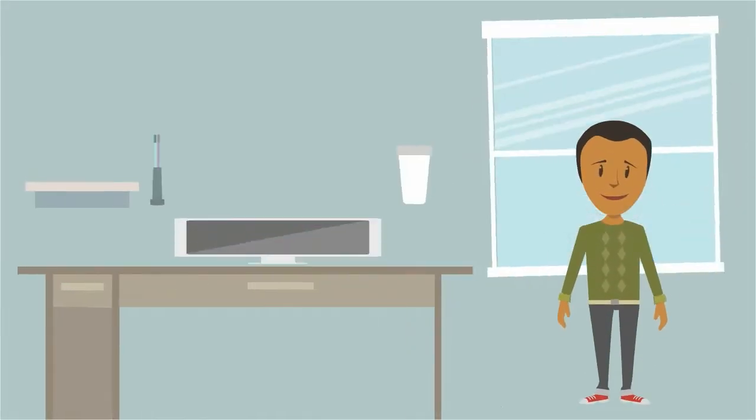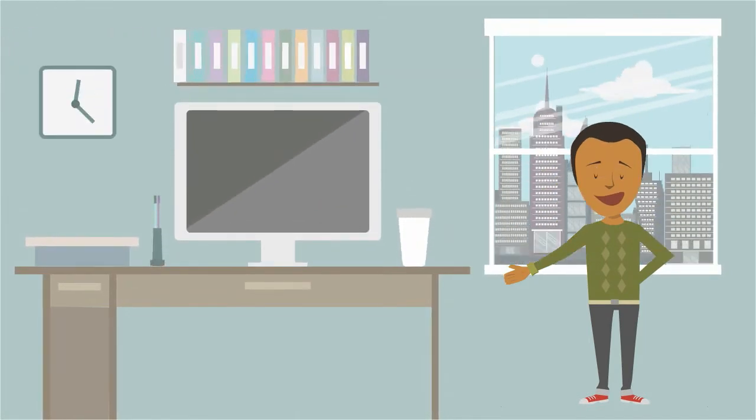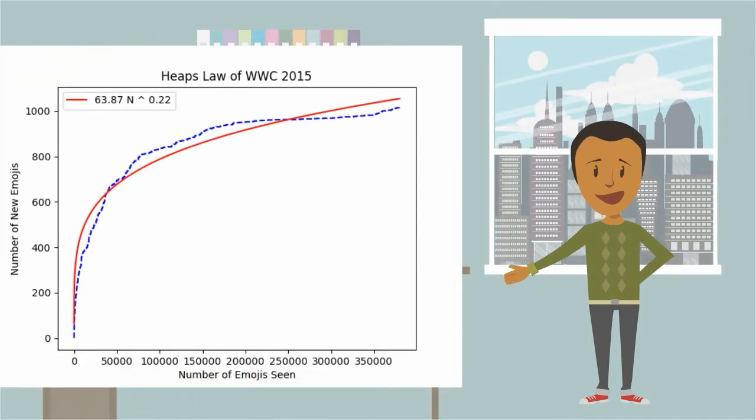Since we found a structure to emojis, we proceeded by comparing emojis to language. We used Heap's Law, which is traditionally used to compare the structure of different languages. We applied Heap's Law to our data, treating emojis as words. The results from Heap's Law affirm that the structure of emojis mirrors linguistics.